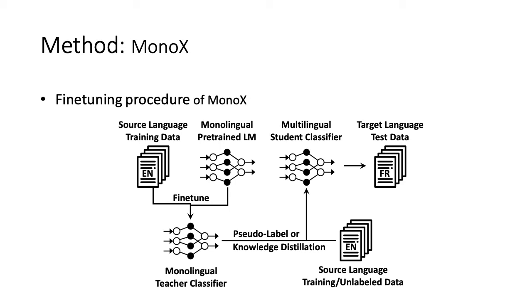In this figure, we present the fine-tuning procedure of MONO-X. We first fine-tune a monolingual pre-trained language model on the source language training data. Then we use the resulting monolingual teacher classifier to train the student classifier. This can be achieved by creating pseudo labels or knowledge distillation. Finally, we evaluate the multilingual student classifier on the test data in target languages.